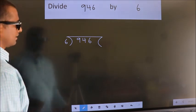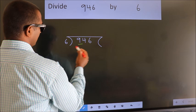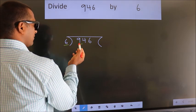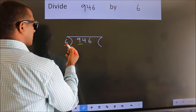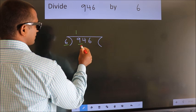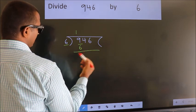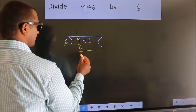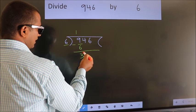Next, here we have 9, here 6. A number close to 9 in 6 table is 6 once 6. Now we should subtract. We get 3. After this,